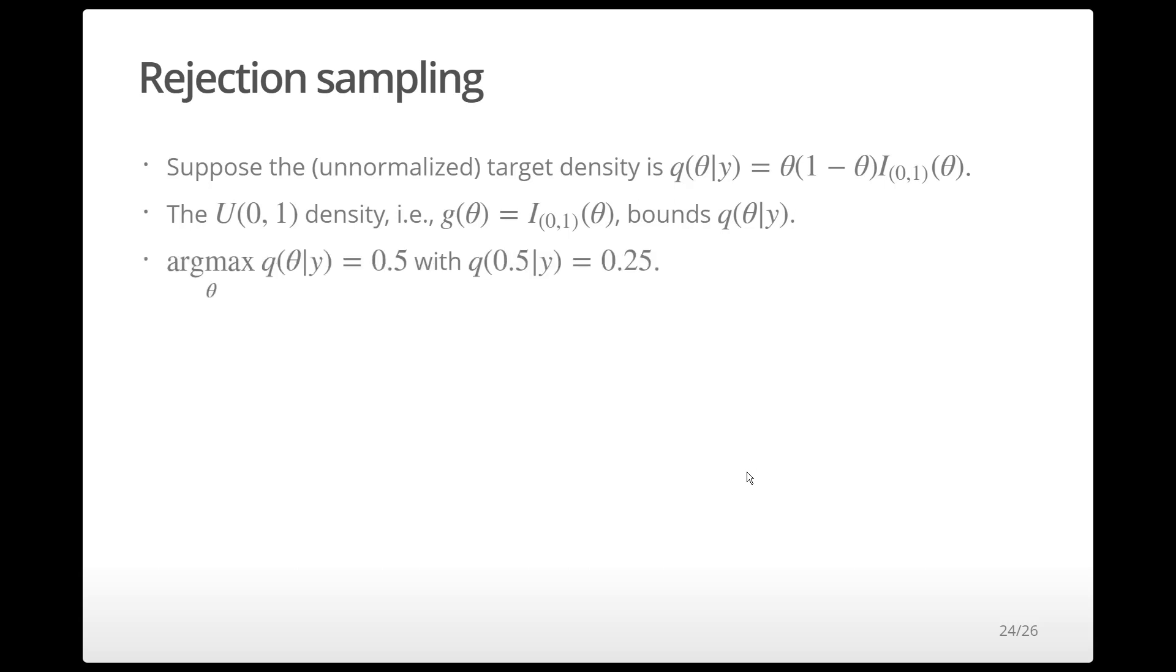The mode of the unnormalized density occurs at 0.5, and the height of that mode is equal to 0.25. So we'll pick our bounding constant m to be 0.25.